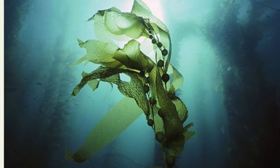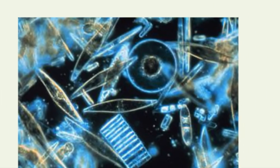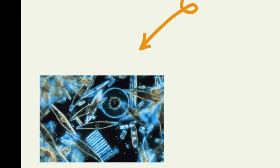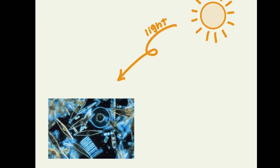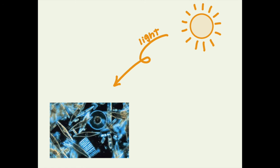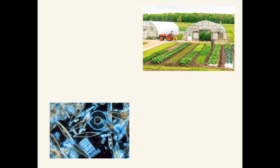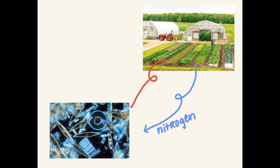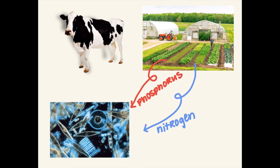Furthermore, the large populations of phytoplankton in the global ocean can help sequester carbon through the process of photosynthesis. With increased nutrients from agricultural runoff, phytoplankton colonies can thrive and sequester more carbon.